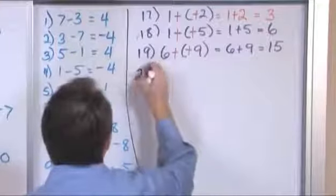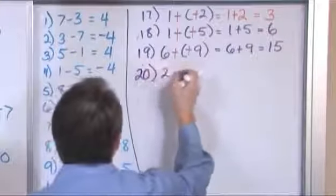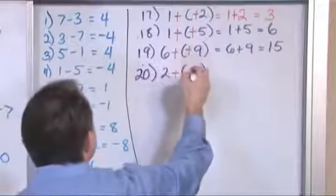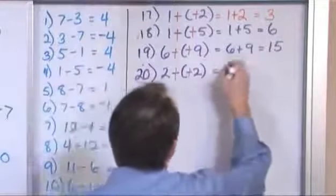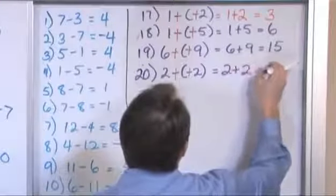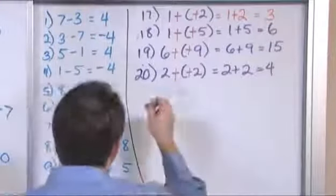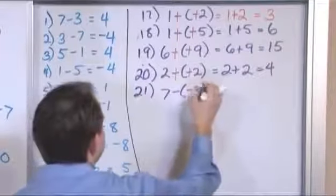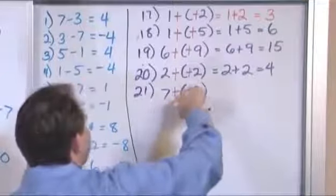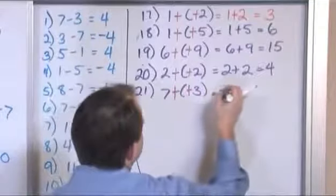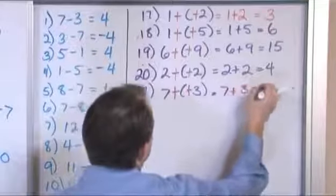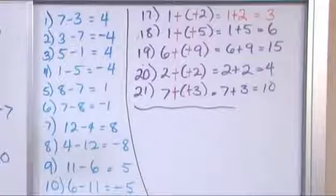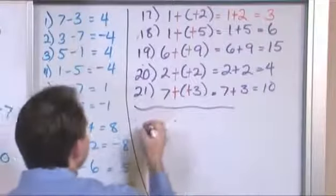Problem 20: 2 minus negative 2. Again, we have subtracting a negative, so we add the opposite, and we'll have 2 plus 2 is 4. Problem 21: 7 minus a negative 3. We add the opposite because we have those negatives together, and it will be 7 plus 3 is equal to 10. So that covers that case. Now let's do a few more where the first number is negative — there's nothing magical about these, I'm just trying to cover all the cases so you see problems of all types.